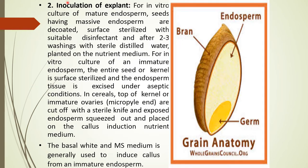For in vitro culture of mature endosperm, seeds with massive endosperms are decoded, surface sterilized with a suitable disinfectant, washed two to three times with sterile distilled water, and planted on a nutrient medium. For immature endosperm culture, the entire seed or kernel is surface sterilized, endosperm tissue is excised under aseptic conditions, and in cereals the micropyle end is cut off with a sterile knife, exposing the endosperm, which is squeezed out and placed on callus induction medium.